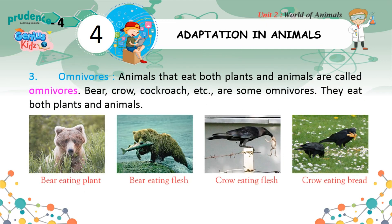Omnivores. Animals that eat both plants and animals are called omnivores. Bear, crow, cockroach, etc. are some omnivores — they eat both plants and animals.